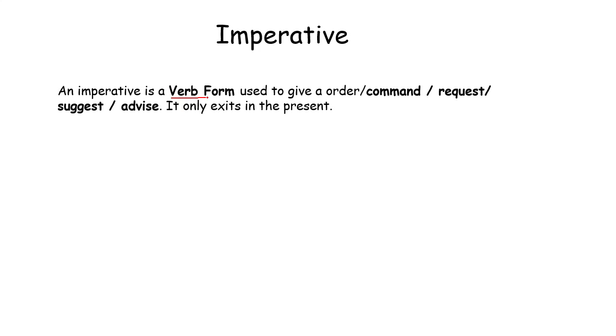An Imperative is a verb form used to give order, command, request, suggestion or advice. It only exists in the present because we can give command, request, suggestion only in present.